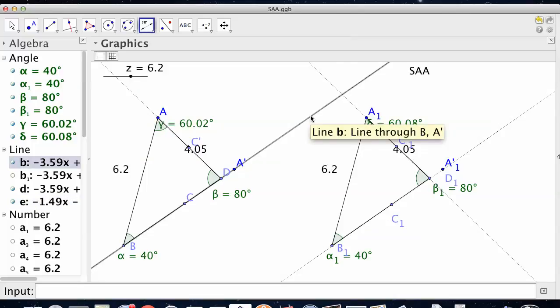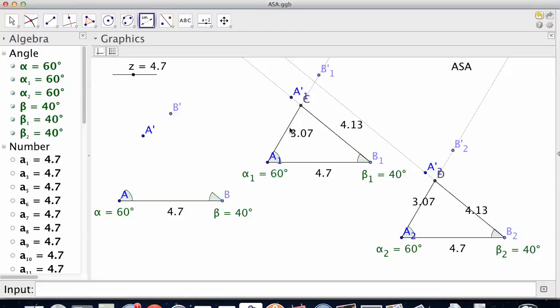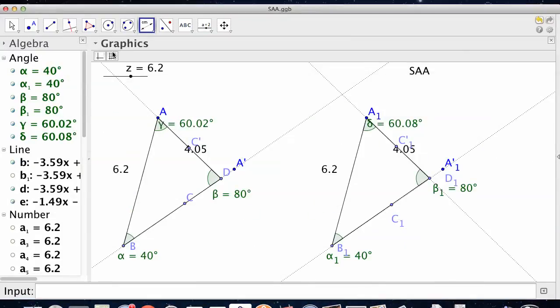So pretty much if I know two angles and a side, whether it's side angle angle or it's angle side angle, that's enough information to make congruent triangles. I don't have to measure the other three parts to make it. I can measure the other three to verify it, but I don't have to measure them to make it. So if I know a 6.2, a 40, and an 80, I'm good.